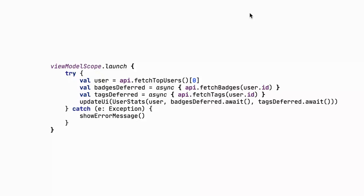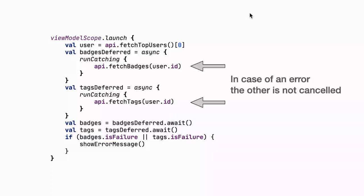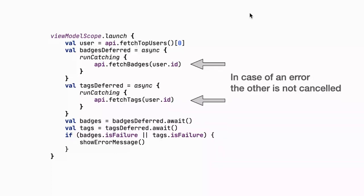Another way to fix it is to use runCatching or a try-catch inside each async block, returning a Deferred of a Result or Either type rather than the object directly. This works without crashing, but there's a problem: the coroutines framework doesn't know about the error because it's caught inside the async. So the other call is not cancelled — if badges fail after one second and tags fail after ten seconds, we have to wait ten seconds even though we know there's an error after one second.